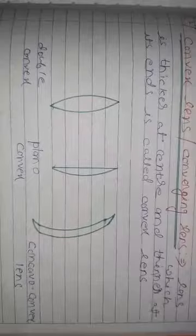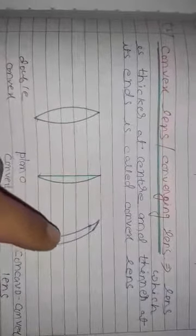There are two types of lenses. The first one is the convex lens, also called the converging lens. A lens which is thicker at the center and thinner at its ends is called the convex lens. There are three types: first is the double convex, second is the plano-convex, and third is the convexo-concave lens. In plano-convex, one surface is plane and another is spherical. In convexo-concave, one surface is concave and another is convex.